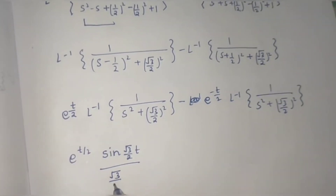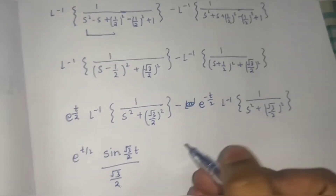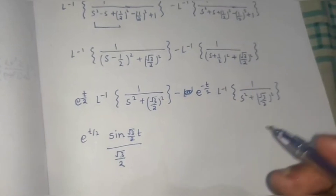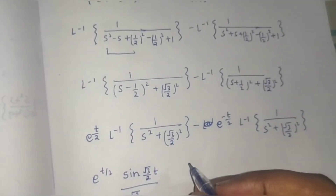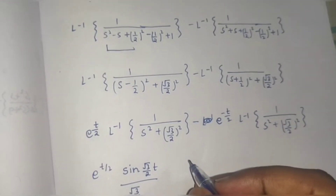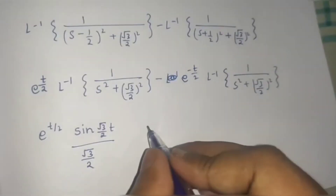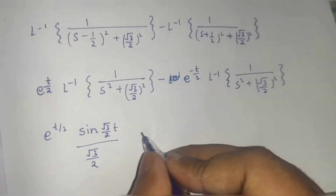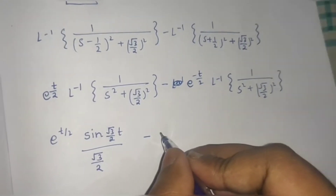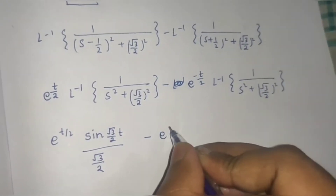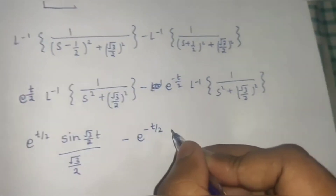Now this you already know: 1 upon S squared plus a squared, Laplace inverse is sin(at) divided by a. Here also sin(at) divided by a. So e power t by 2 times sin(root 3 by 2 · t) divided by root 3 by 2. And here you are getting minus e power minus t by 2 times sin(root 3 by 2 · t) divided by root 3 by 2.